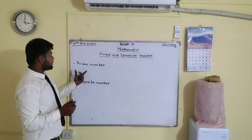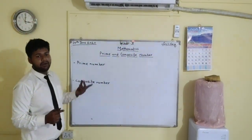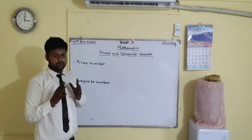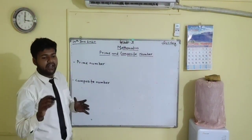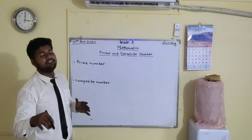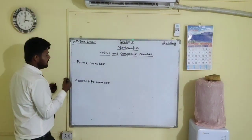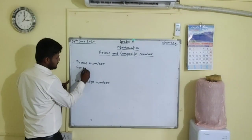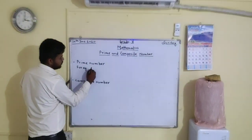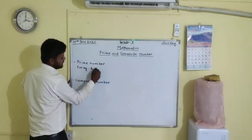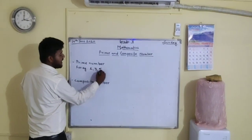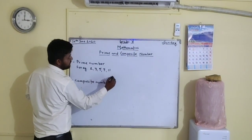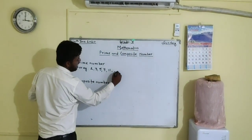Now what is a prime number? Prime numbers are those numbers which are divisible by one and itself only. For example, 2, 3, 5, 7, 11 and so on.